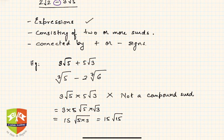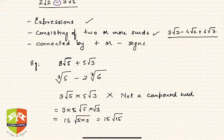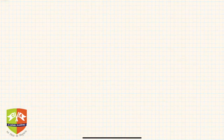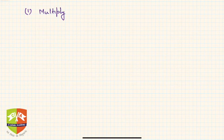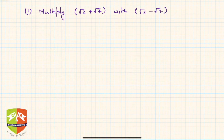When there is a multiplication or division sign between surds, we do not consider them compound surds. Compound surds consist of two or more surds separated by plus or minus signs — for example, 3√3 minus 4√2 plus 6√7. Now we are interested in operations on compound surds. For example, let us multiply (√2 + √7) with (√2 − √7).